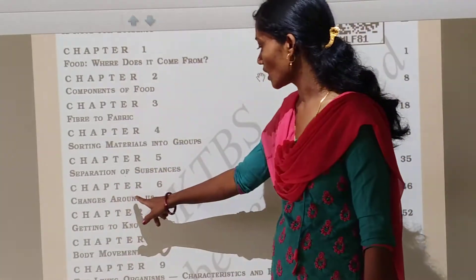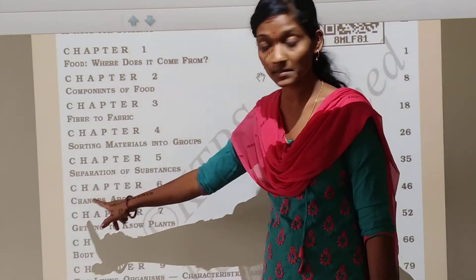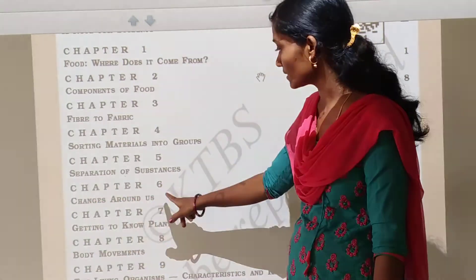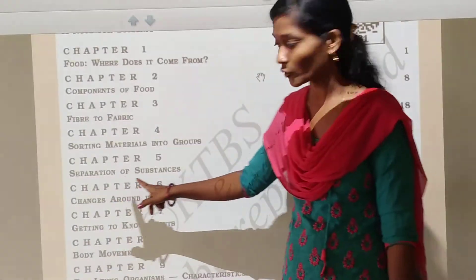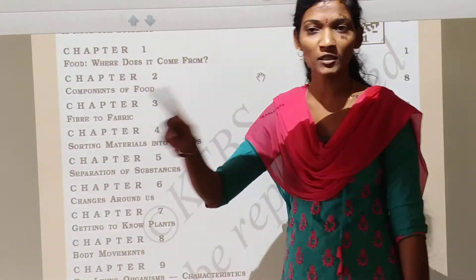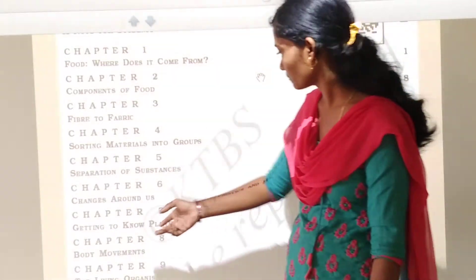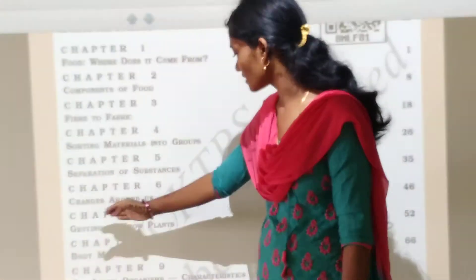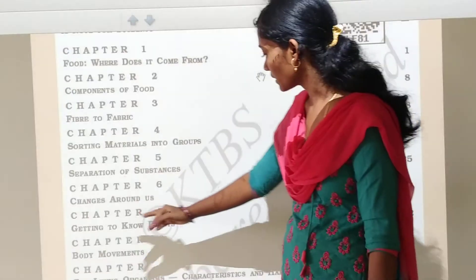Next, chapter number 6: Changes around us. In this chapter we study about reversible and irreversible changes. Next, chapter number 7.